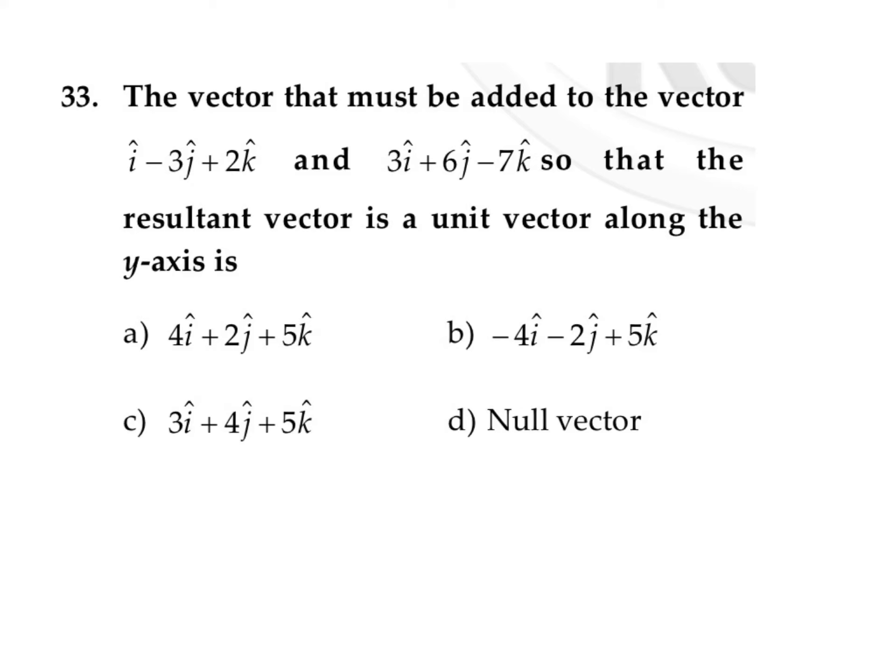In this question, it is given that the vector that must be added to the vectors i cap minus j cap plus 2k cap and 3i cap plus 6j cap minus 7k cap so that the resultant vector is a unit vector along the y-axis.